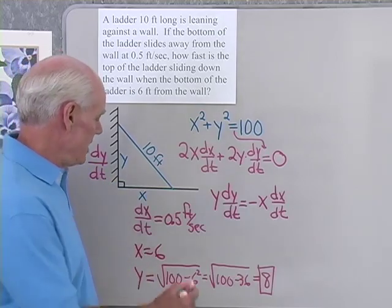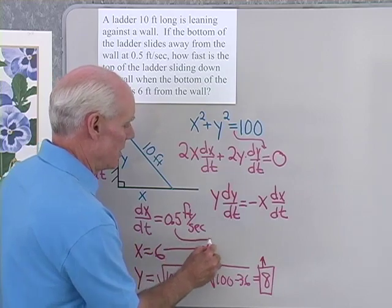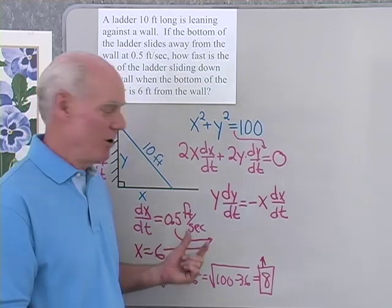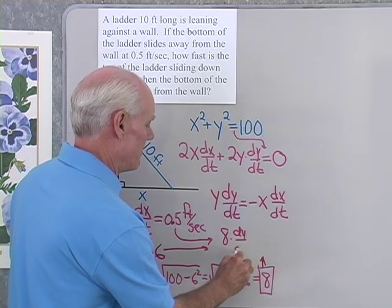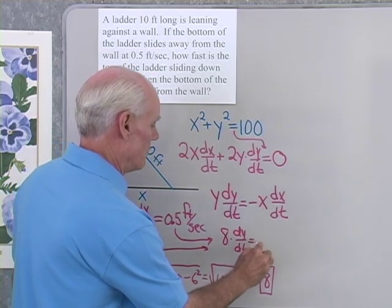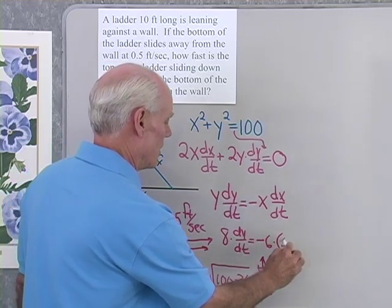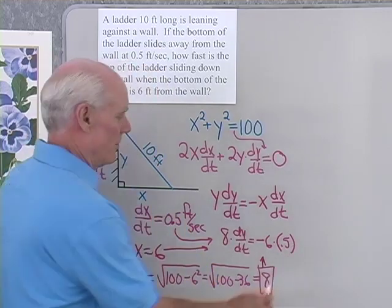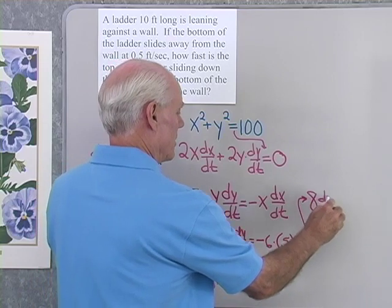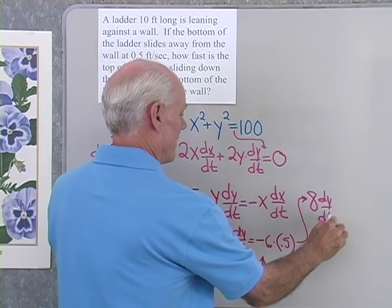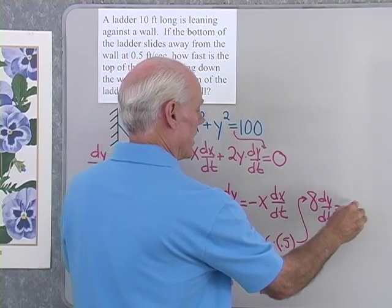I'll substitute in x equals 6, y equals 8, and dx/dt equal to 0.5. So 8 times dy/dt is equal to negative x — which is 6 — times dx/dt — which is 0.5. That gives us 8 times dy/dt equals negative 6 times 0.5, which is going to be negative 3.